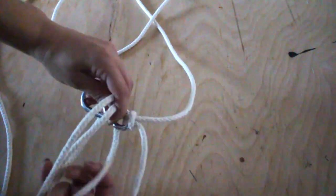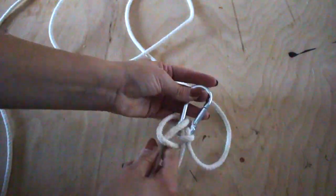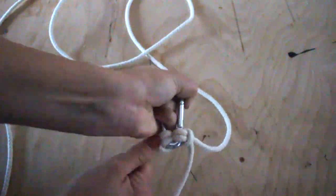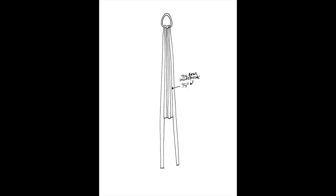For the longer outside pieces, you'll want to fold the rope where the inside piece is about 75 inches long. This will make the outside pieces way longer than the rest but that is what you want.